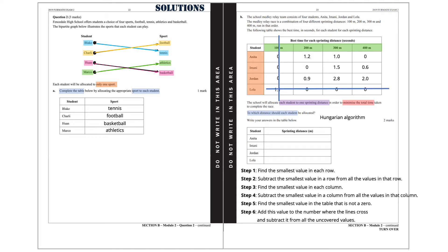Again, we are going to draw horizontal and vertical lines to cover all the zeros. Now there are four lines that cover the zeros, which correspond to the four options. For this reason we can now start and allocate the sprinting distances. From column 3 there is only one zero, which means that Lola is going to run the 300 metres. In column 4 the only zero remaining is for Anita, so Anita is going to run the 400 metres. Similarly, Imani is going to run the 200 metres, and Jordan is going to run the 100 metres.